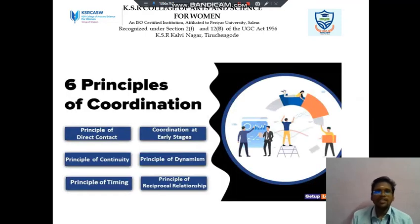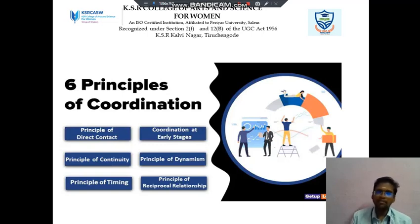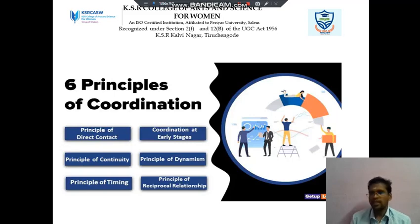Next we discuss about the 6 Principles of Coordination. The first is the Principle of Direct Contact, then Principle of Continuity, then Principle of Timing, then Coordination at the Early Stage, then Principle of Dynamism, and then Principle of Reciprocal Relationship. These are the 6 principles we will discuss.